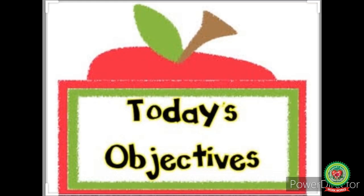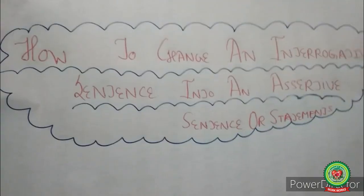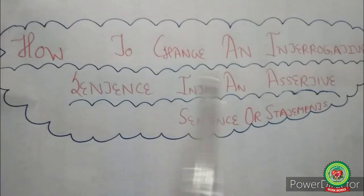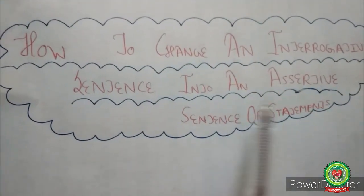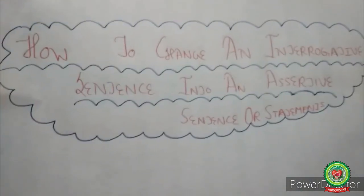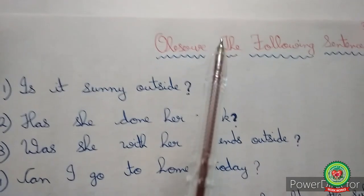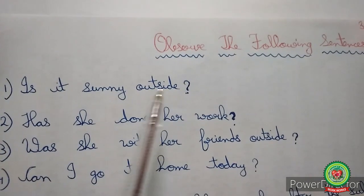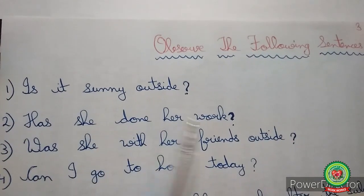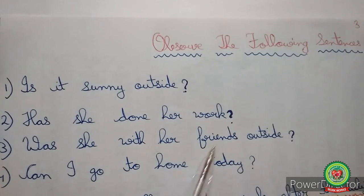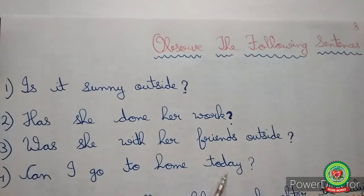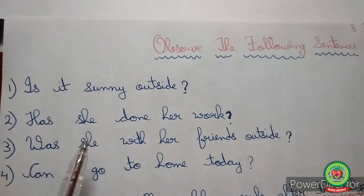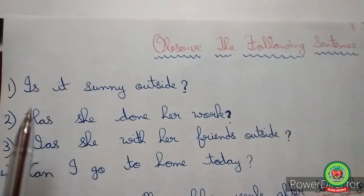But today we will learn how to change an interrogative sentence into an assertive sentence or statement. Observe the following sentences: 'Is it sunny outside?' 'Has she done her work?' 'Was she with her friends outside?' 'Can I go home today?' All of these are interrogative sentences as they begin with helping words and end with a question mark.